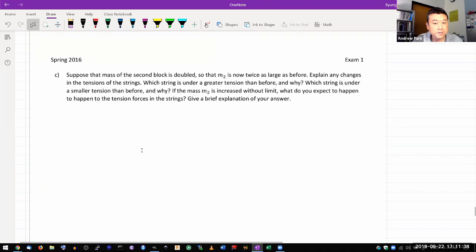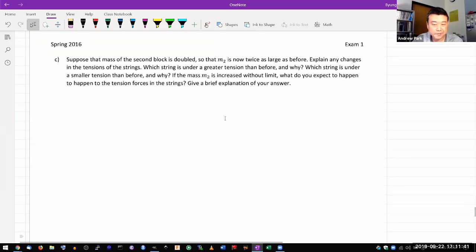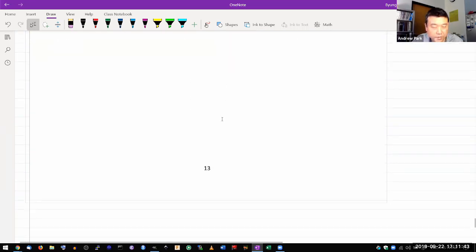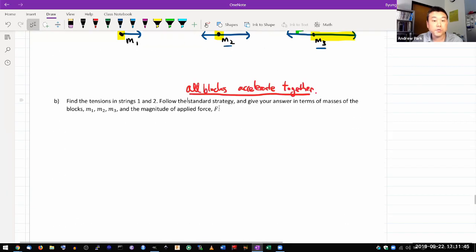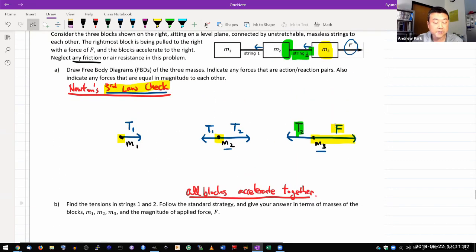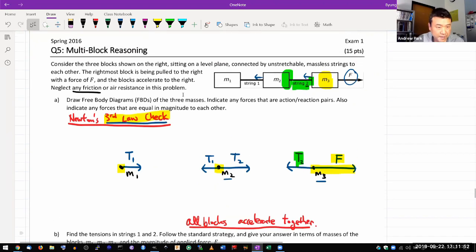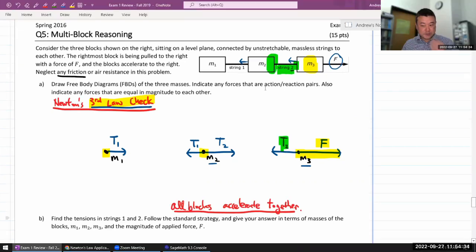In part B, really the main thing that you have to remember is make sure you remember that all blocks accelerate together. And that fixes what the tensions T1 and T2 have to be, so that all blocks accelerate together. I think part B is fairly easy to do here. I don't want people to focus on minutiae. It's more about do you understand how to set it up and how to analyze it so that I can give you infinite different varieties.